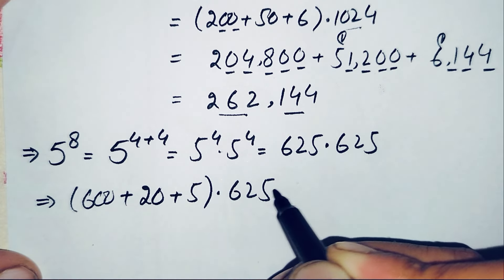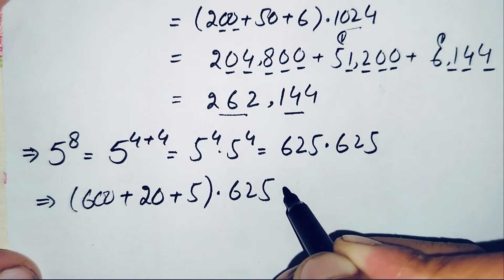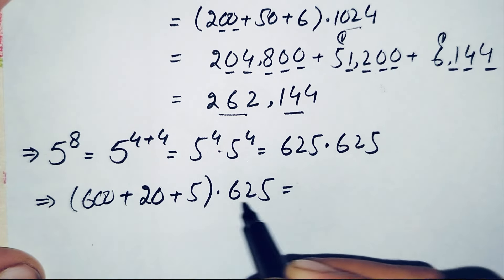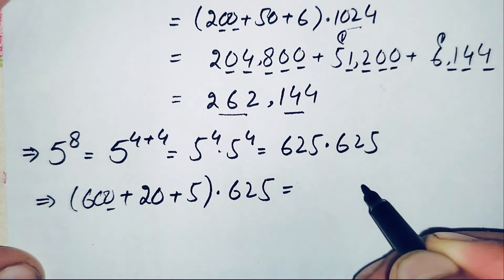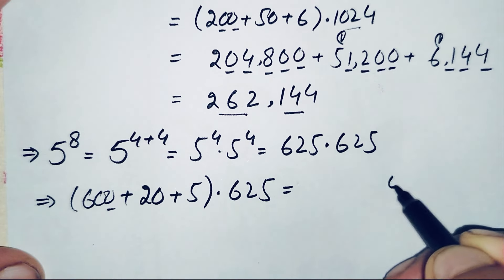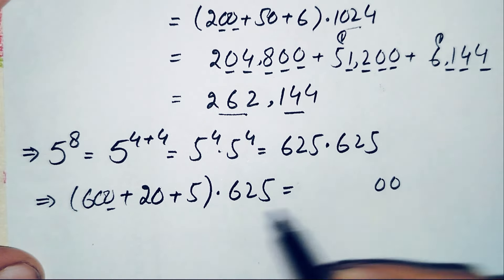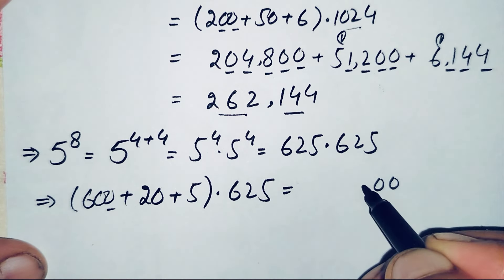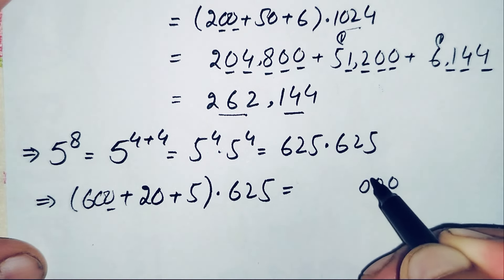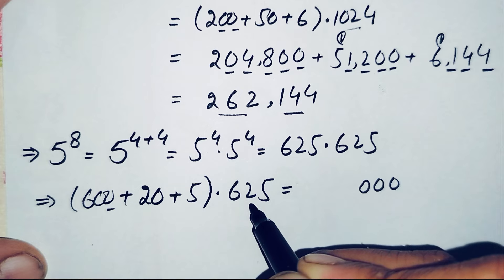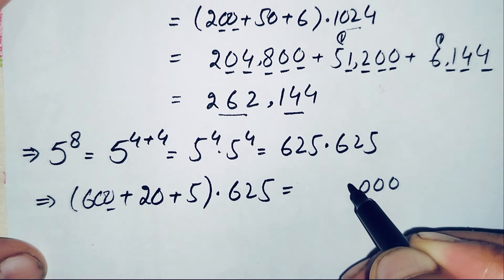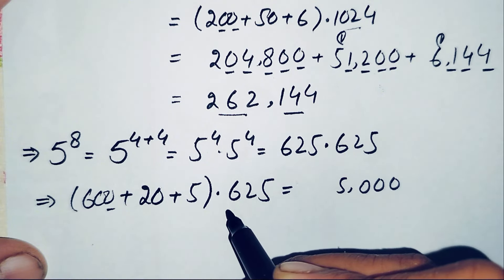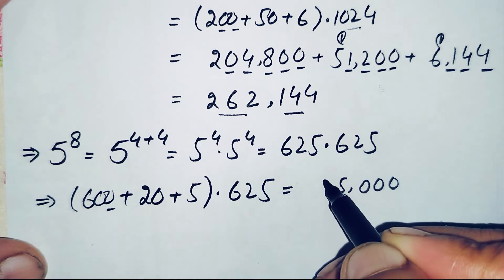We multiply 625 by 600: 625×0=0, 625×0=0, then 625×6: 6×5=30 (write 0, carry 3), 6×2=12 plus 3 is 15 (write 5, carry 1), 6×6=36 plus 1 is 37. So 625×600 gives the partial product with result 375,000.